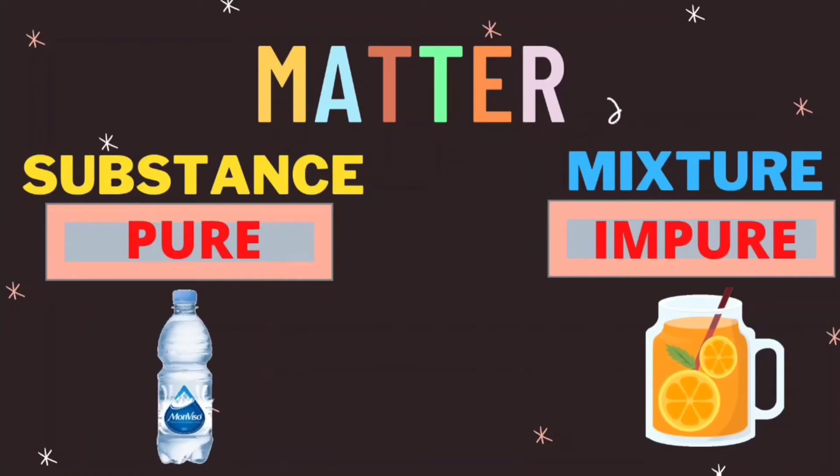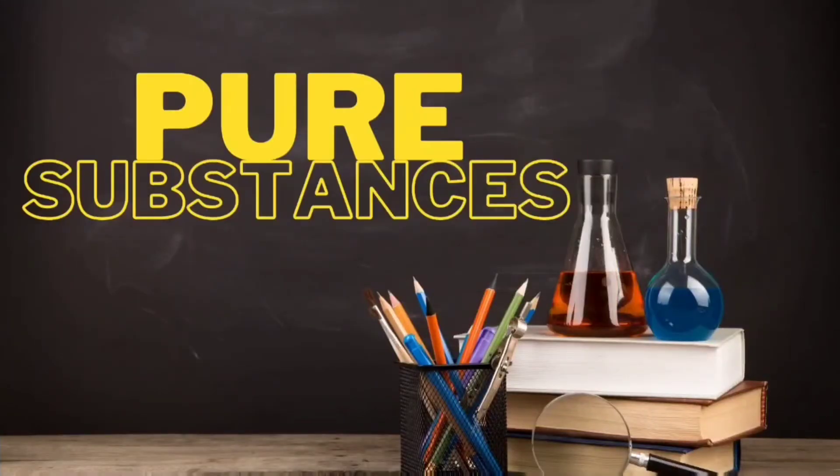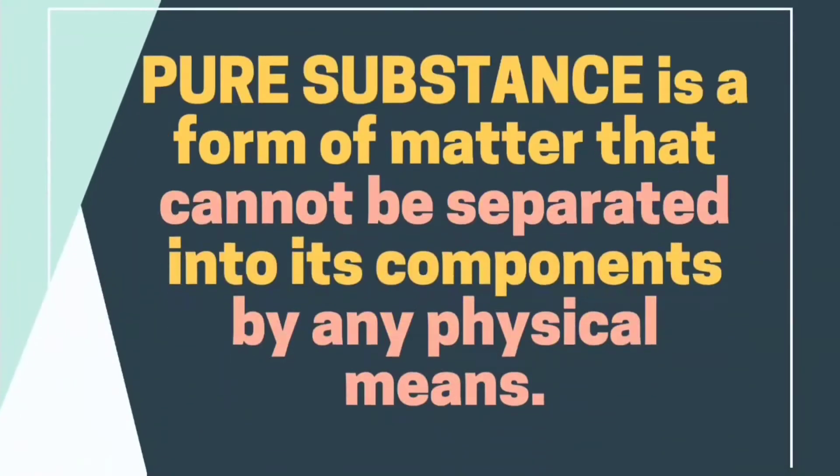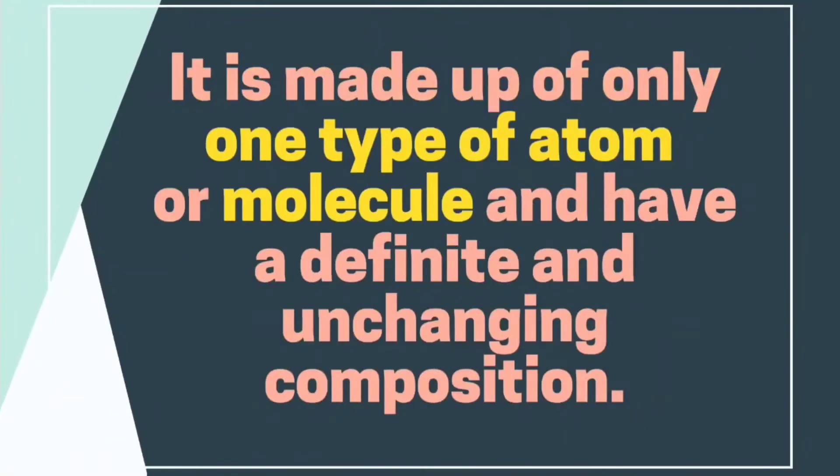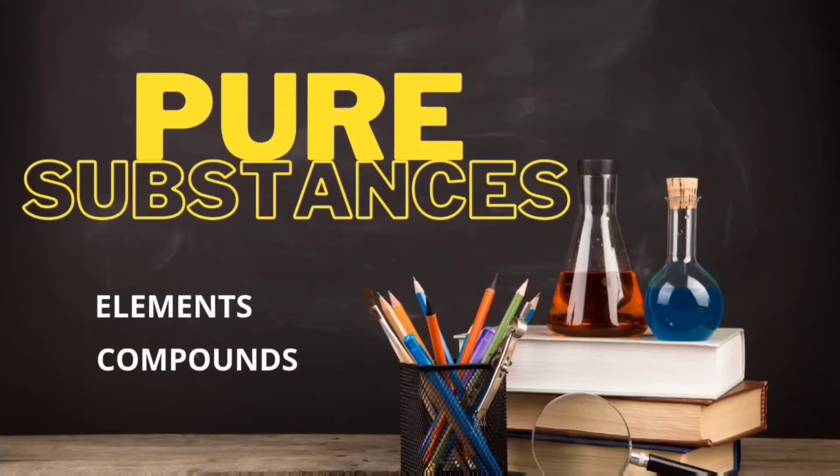In your module 3, we will be discussing about the pure substances. Pure substance is a form of matter that cannot be separated into its components by any physical means. It is made up of only one type of atom or molecule and have a definite and unchanging composition. There are two types of pure substances, namely elements and compounds.